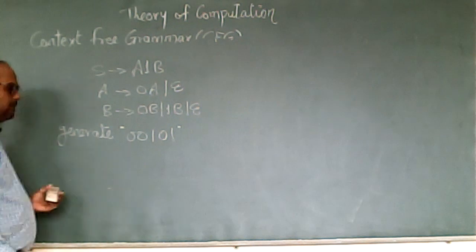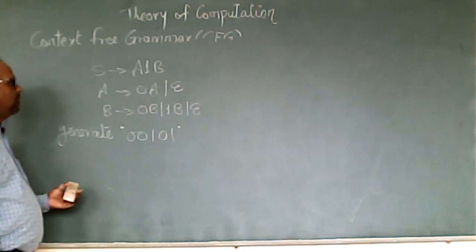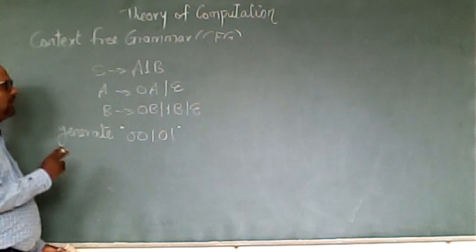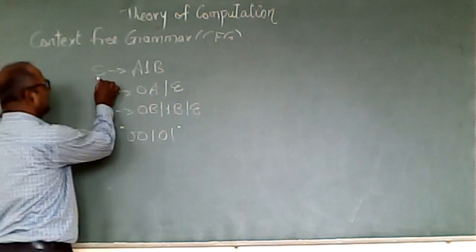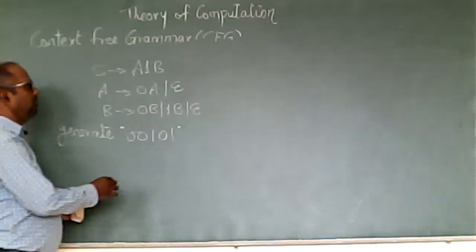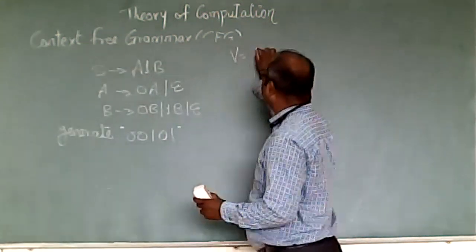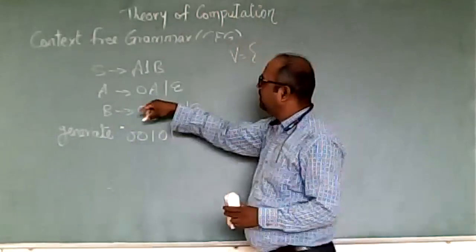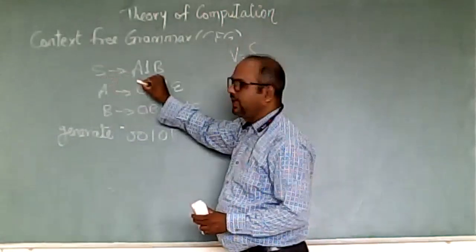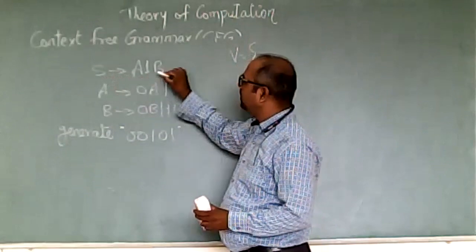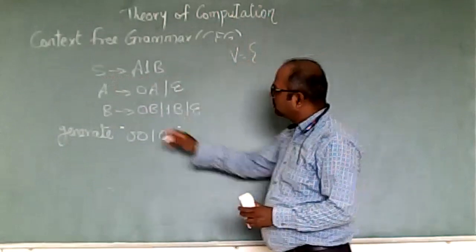This CFG is given. Now we will see how these three productions are represented. What exactly is this? S is your starting symbol. If we want to write the V, T, P, S — variables are: S is the starting variable, A is the next variable, B is the next variable.